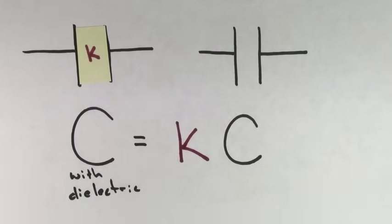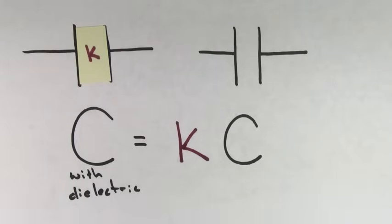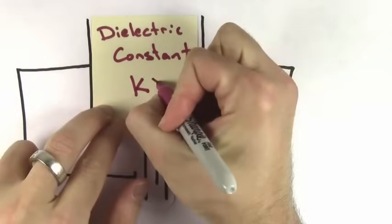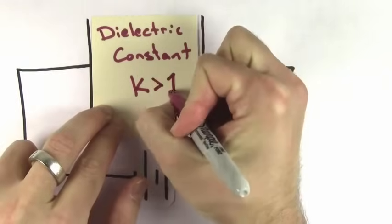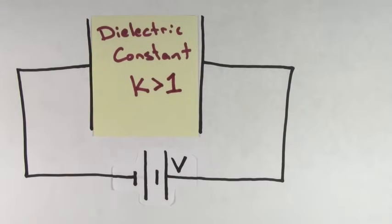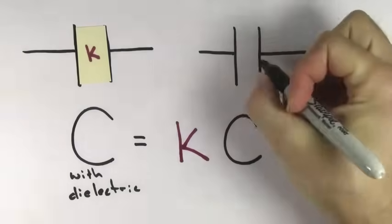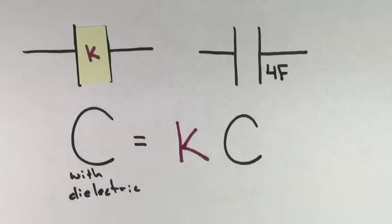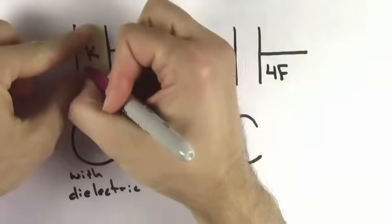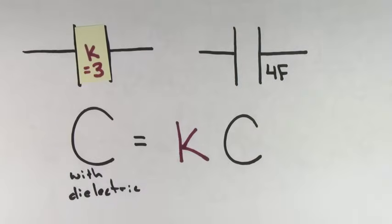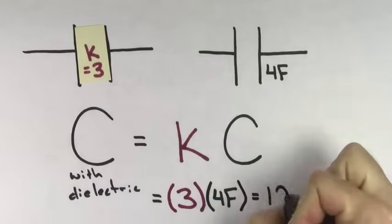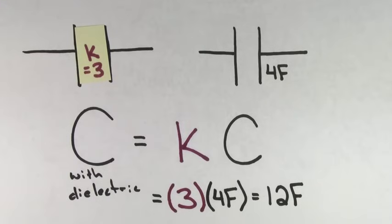The dielectric constant is often represented with the Greek letter kappa, or simply K. Since a dielectric always increases the capacitance, the dielectric constant K for a non-conducting material is always greater than one. The formula is simple: if the capacitance before inserting a dielectric was C, then the capacitance after inserting a dielectric is K times C. For example, if a capacitor has a capacitance of 4 farads and you insert a dielectric with dielectric constant 3, the capacitance will become 12 farads.